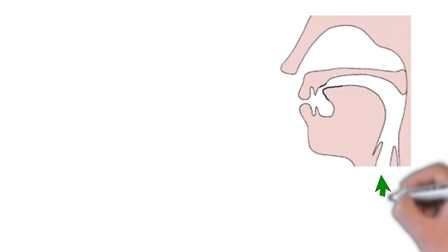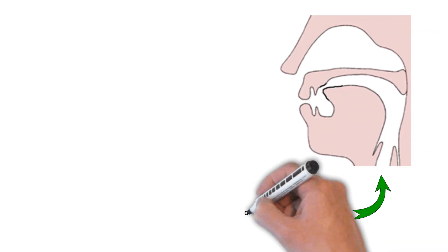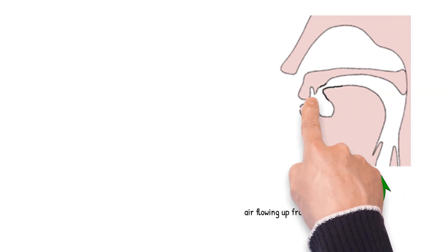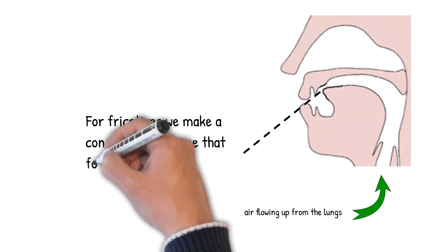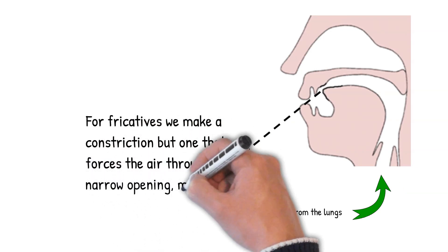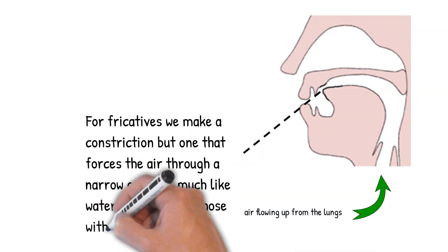Unlike stop consonants, which we make by blocking the flow of air momentarily but completely, with fricatives we make a constriction in the vocal tract, but it's a constriction that forces the air through a narrow opening, much like what we just saw with the thumb over a hose.